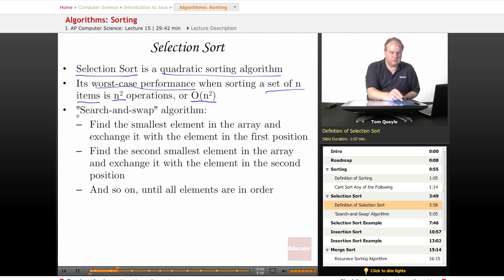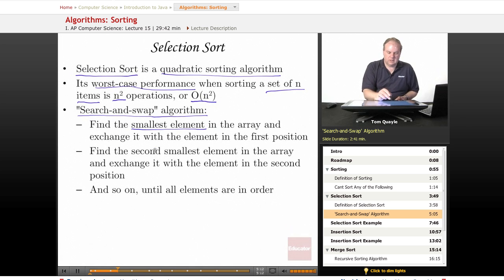Selection sort is known as a search and swap algorithm. What we do is we find the smallest element in the array and exchange it with the element that's in the first position.